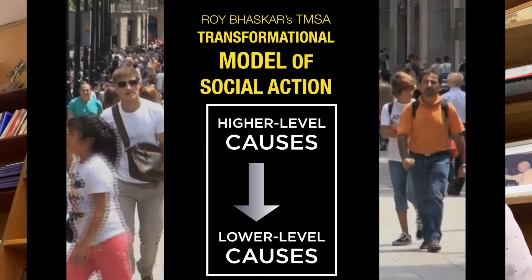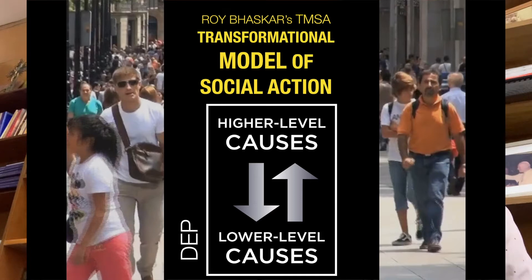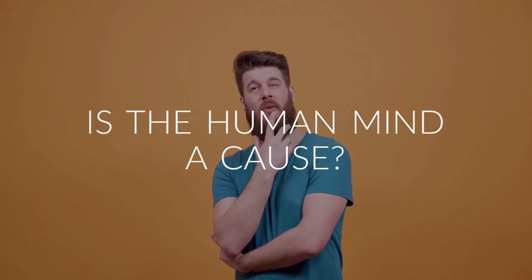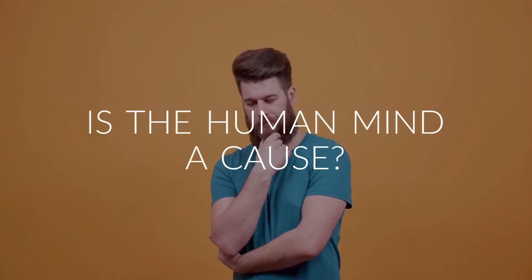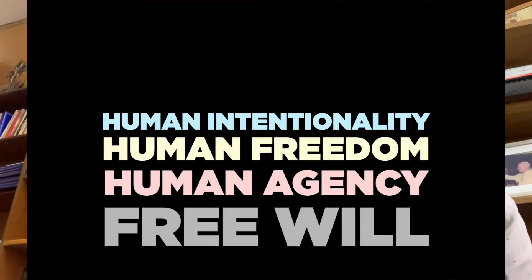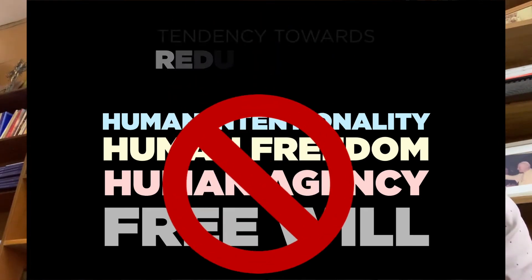The relationship between the types of causes and our hierarchy of causes are characterized by dependency and distinction. The higher level causes are dependent on the lower level causes, but they remain distinct from them — they are irreducible. Here's an interesting question: is a human mind a cause? There's a tendency today towards its denial — that there's no such thing as human intentionality, no such thing as human freedom or human agency or free will. This is really a tendency towards reductionism.